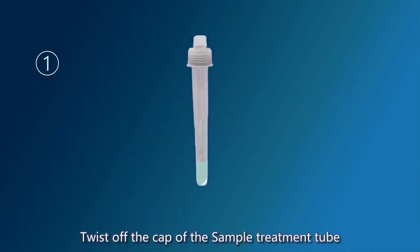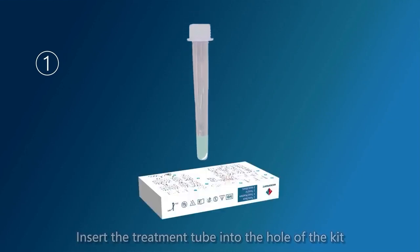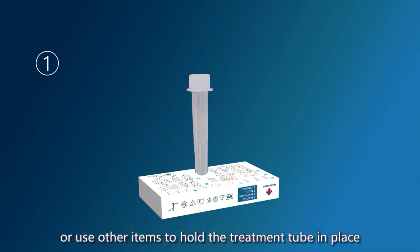Twist off the cap of the sample treatment tube and remove the inner blue stopper. Insert the treatment tube into the hole of the kit or use other items to hold the treatment tube in place.